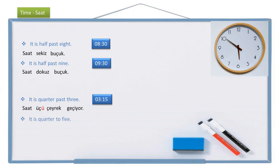Another example: if the sentence is it is quarter to five, this time it's not passing. We need to use 'there is / there are' — var in Turkish. It is: saat, five — beş, with the dative suffix — beşe, quarter — çeyrek, var. It is quarter to five: saat beşe çeyrek var.